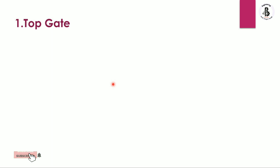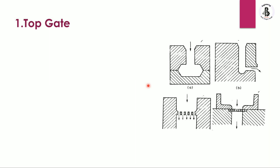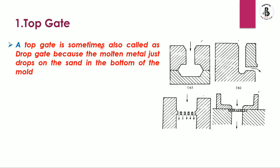The first type is the top gate system. As shown in the figures, the arrangement of the top gate system has the molten metal entering from the top side of the mold. There can be multiple arrangements — first, second, third, and fourth — but the basic arrangement is that the molten metal enters from the top side into the mold cavity. A top gate is sometimes also called a drop gate because the molten metal drops down onto the sand at the bottom of the mold.